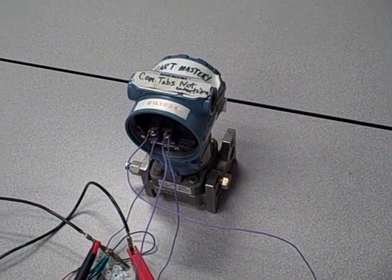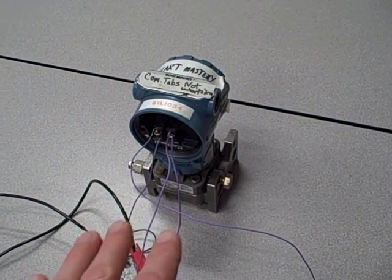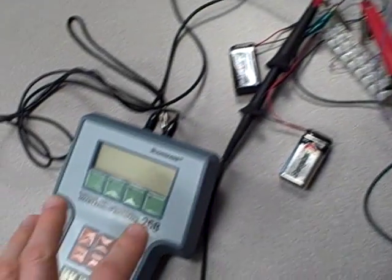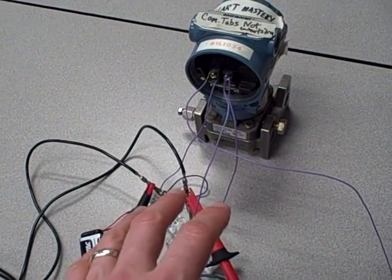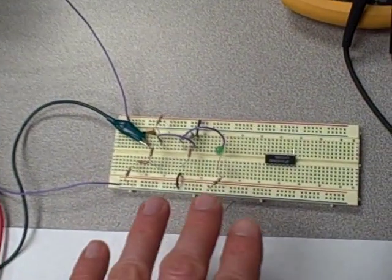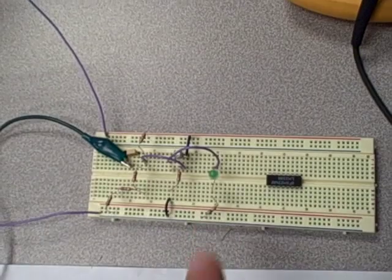Now as we know, the HART protocol is a superimposed frequency shift keyed AC signal that rides on top of the same two wires as the 4 to 20 milliamp DC signal. So when this communicator is talking to the transmitter and the transmitter replies back, we'll see bursts of AC millivoltage on those two wires. The purpose of this circuit is to detect those bursts of AC millivoltage and to light up the LED when they happen.